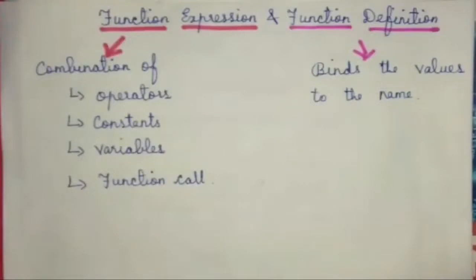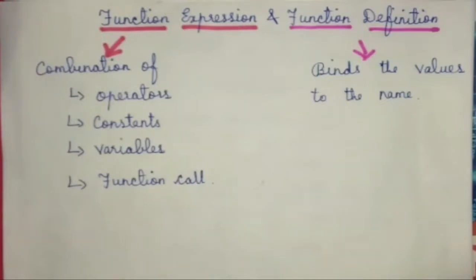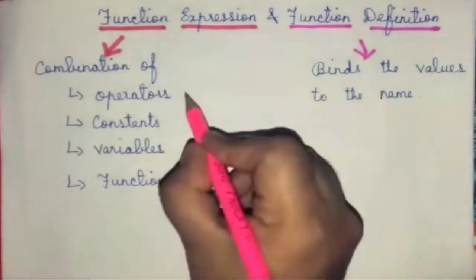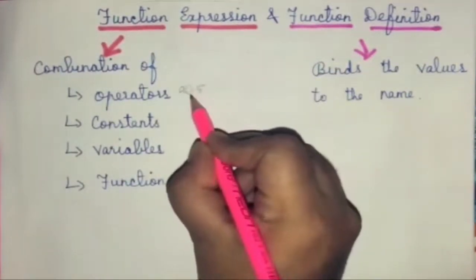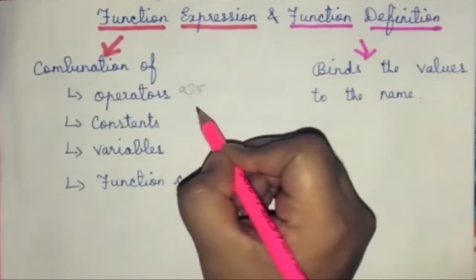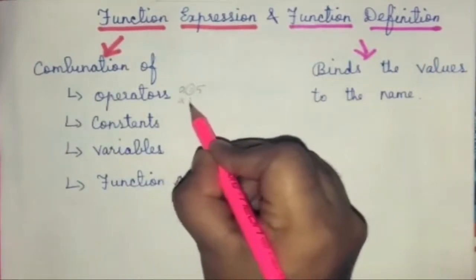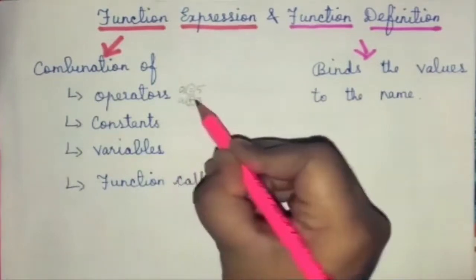Now let us see what is a function expression and what is a function definition, and the difference between them. First we will see function expression. Function expression means it is a combination of operators, constants, variables, and function calls. For operators, we will see one example: a = 5, where the equal to sign is the assignment operator, or 8 + 3, where plus is the addition operator.